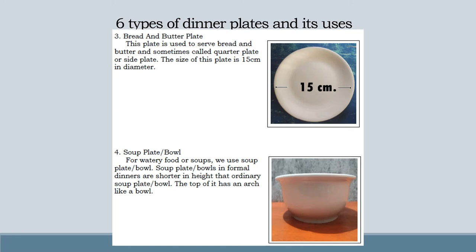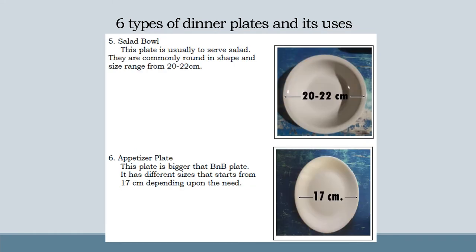Number 4: Soup plate or bowl — for watery food or soup, we use a soup plate or bowl. Soup plates or bowls in formal or informal diners are shorter in height than ordinary soup plates or bowls. Number 5: Salad bowl — this plate is usually used to serve salad. They are commonly round in shape and size ranges from 20 to 22 cm. Number 6: Appetizer plate — this plate is bigger than the bread and butter plate. It has different sizes that start from 17 cm depending upon the need.